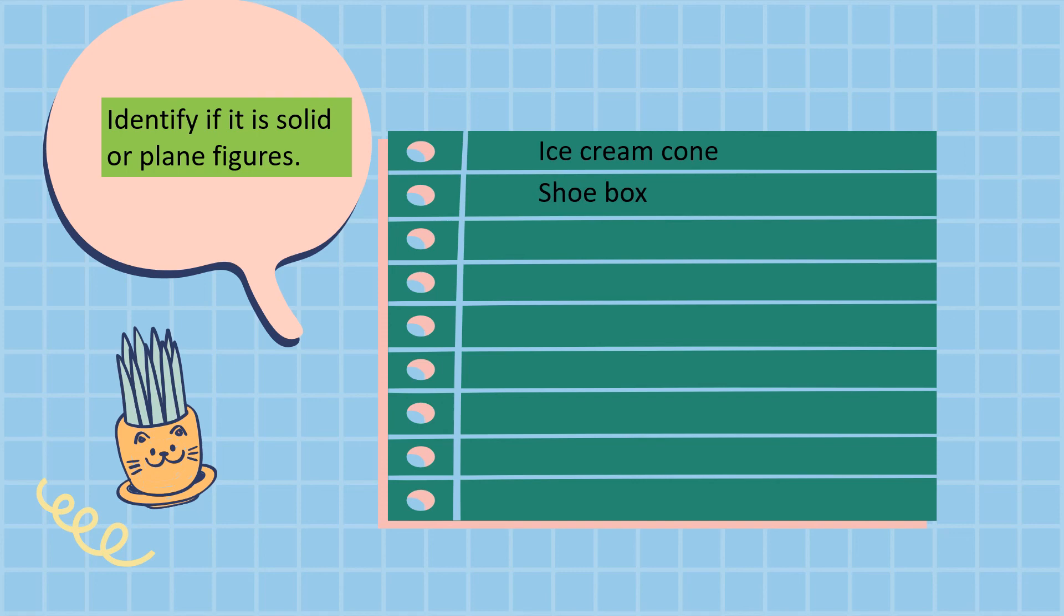How about this one? This is an example of, this is a solid and rectangular prism, right? A box. How about this one? A book that is also rectangular prism, and that is solid.